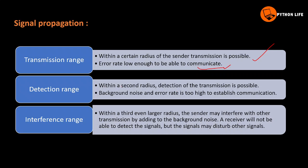With a second, larger radius, detection of the transmission is possible but the error rate is too high for reliable communication — this is the detection range. Within a third, even larger radius, the interference range, the center may interfere with other transmissions by adding to the background noise.